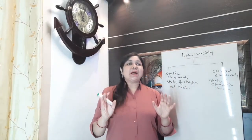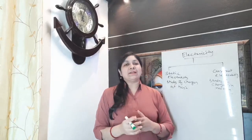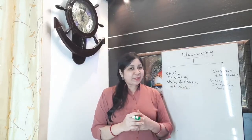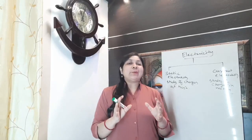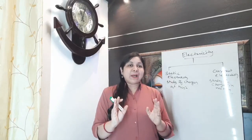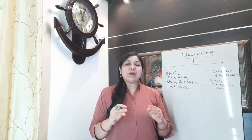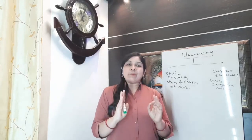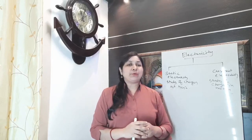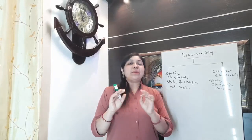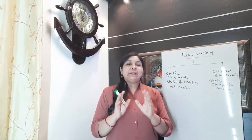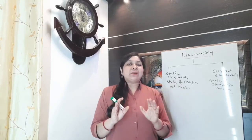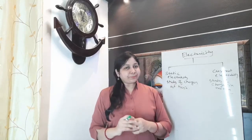Every matter in our surrounding is electrically neutral. We discussed this in our previous video in the structure of atom. Every matter contains atoms, and each and every atom contains three subatomic particles: electron, proton, and neutron. Electrons and protons are in equal amounts, so they nullify each other, and ultimately the matter is electrically neutral.